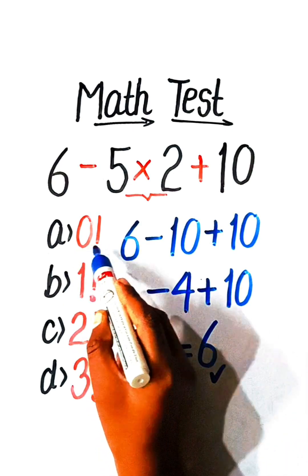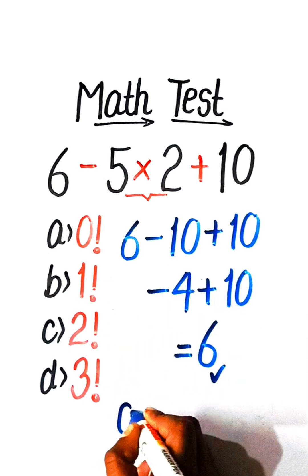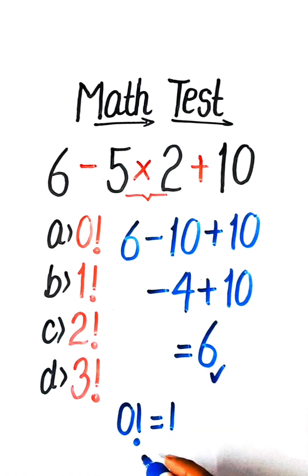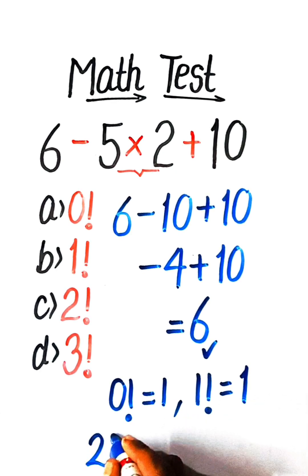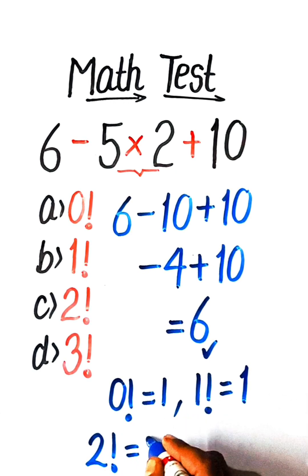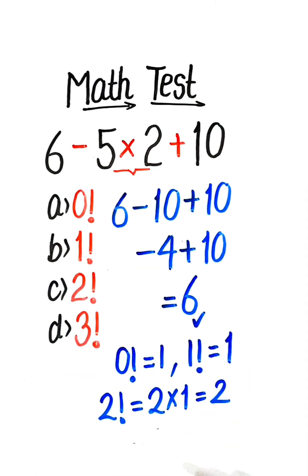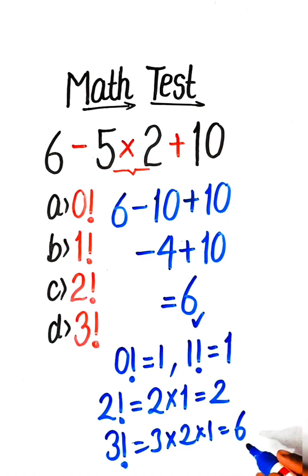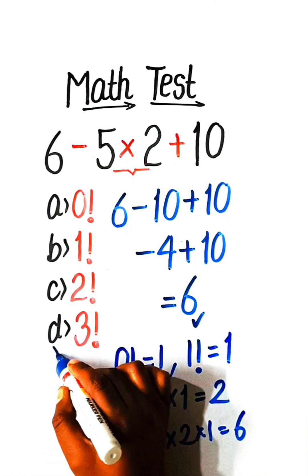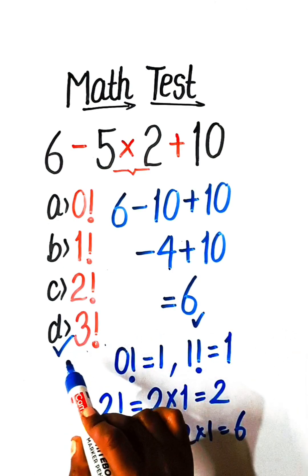The value of 0 factorial is 1, the value of 1 factorial is 1, the value of 2 factorial is 2 multiply by 1 equals 2, and the value of 3 factorial is 3 multiply by 2 multiply by 1 equals 6. So Option D will be the correct answer.